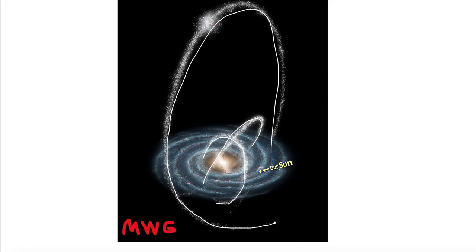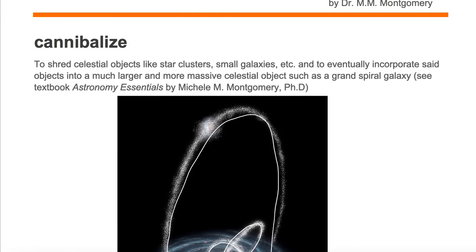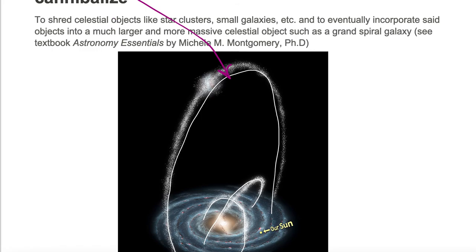These spiral arcs are what we are referring to as cannibalization. They are shredding of small celestial objects such as star clusters, small galaxies, etc. that will eventually get incorporated into the Milky Way galaxy.